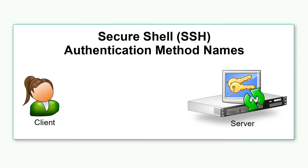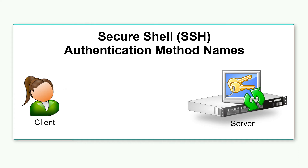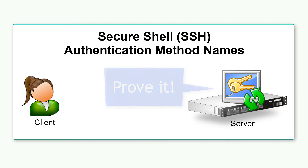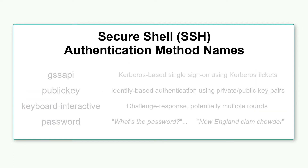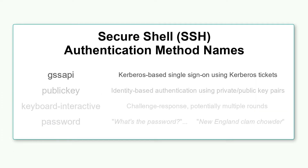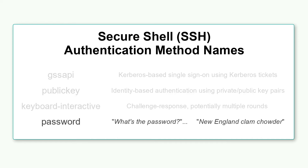The Secure Shell protocol allows for a variety of methods that a connecting client can use to authenticate itself to the server. Authentication methods generally supported by Secure Shell clients and servers include GSS API, Public Key, Keyboard Interactive, and Plain Old Password.